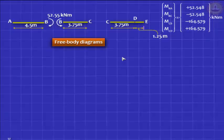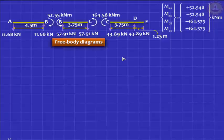Now you are in a position to draw these free bodies. Plus 52.55, minus 52.55, minus 164.58, plus 164.58. Everything is matching very well because those were the equilibrium conditions you enforced.